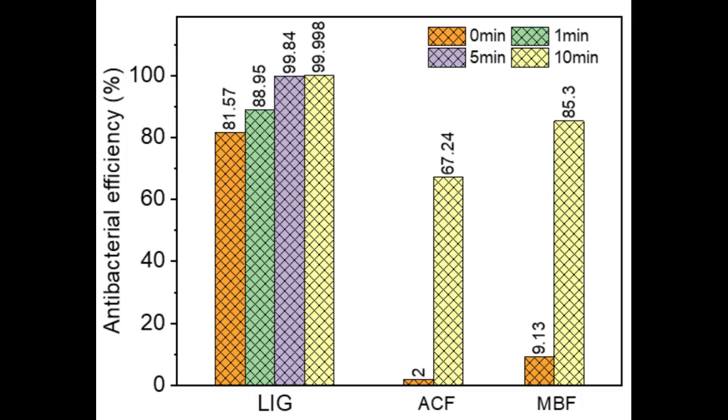A research team from City University of Hong Kong has successfully produced graphene masks with an antibacterial efficiency of 80%, which can be enhanced to almost 100% with exposure to sunlight for around 10 minutes.